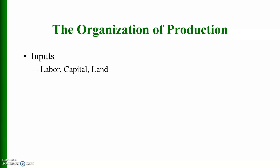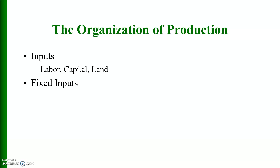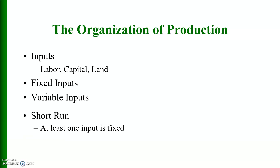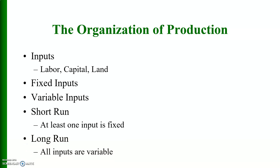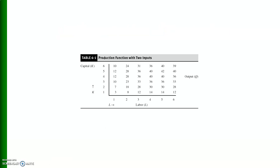In the organization of production, we use various inputs including labor, capital, and land. Some inputs or factors of production are fixed and some are variable. In the short run, at least one input must be fixed, and in the long run all inputs are variable. The production function with two variable inputs — labor and capital — can be represented where we measure units of capital vertically and units of labor horizontally, forming what we call the production space, similar to commodity space in consumer theory.